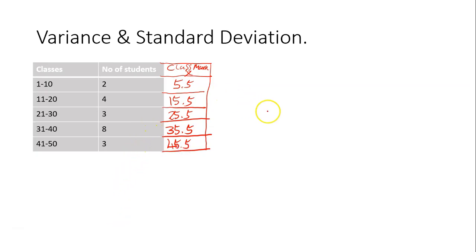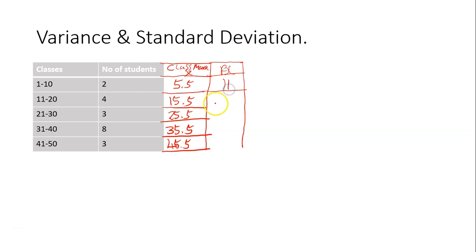The next thing you do is create another column for fx — that's frequency times the class mark. For the first class, the frequency is 2 and the mark is 5.5, so 2 times 5.5 you get 11. For the second class, 4 times 15.5 you get 62.